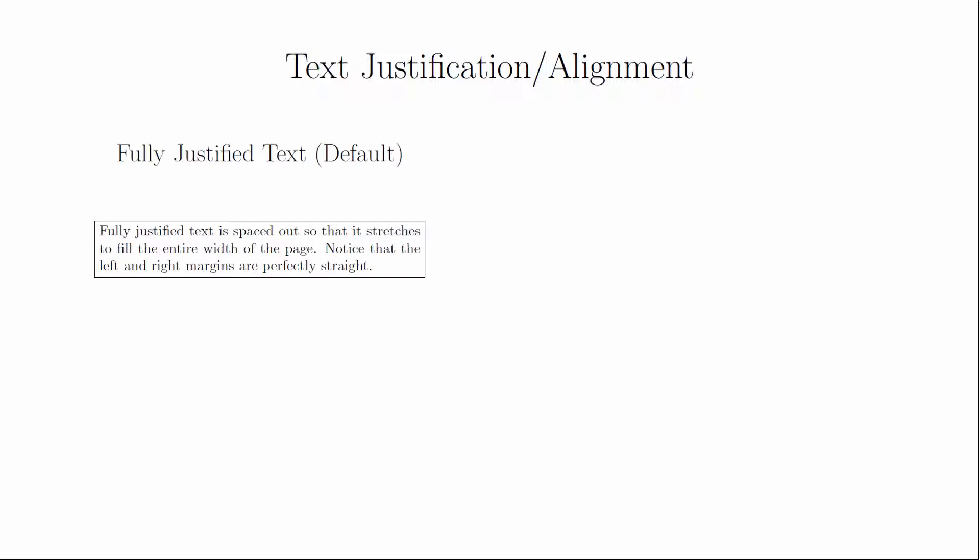The next type of text modifier that most people look for is alignment. The default behavior of LaTeX is to stretch the text out so that it fills the entire space between the margins. This is sometimes called full justification. Alternate alignment modes no longer attempt to do that, which gives your text ragged edges.